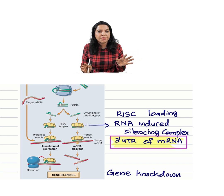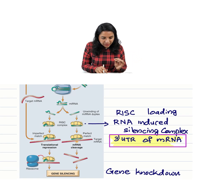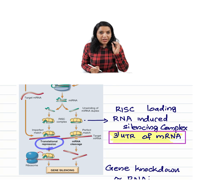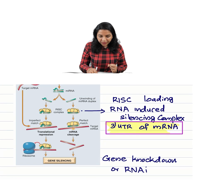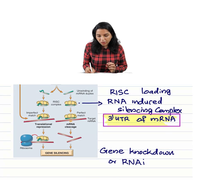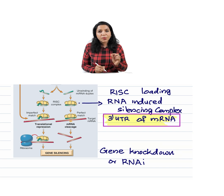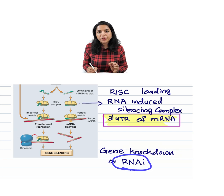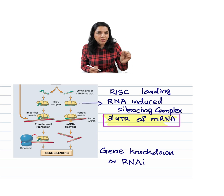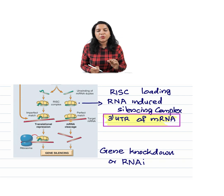If the pairing between the miRNA and the mRNA is imperfect, it will not cleave the mRNA but will arrest its translation. The net effect is gene silencing, otherwise called gene knockdown or RNA interference. This regulation of gene expression is a post-transcriptional regulation of gene expression.